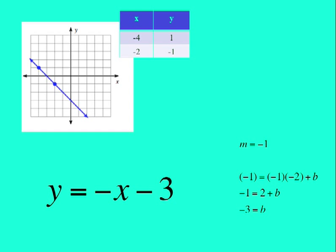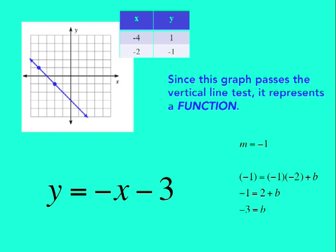So our equation would be y equals negative x minus 3. We know by applying the vertical line test that this does represent a function, and so we can rewrite some of this information in function notation.